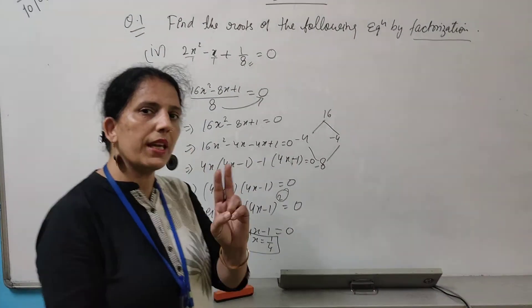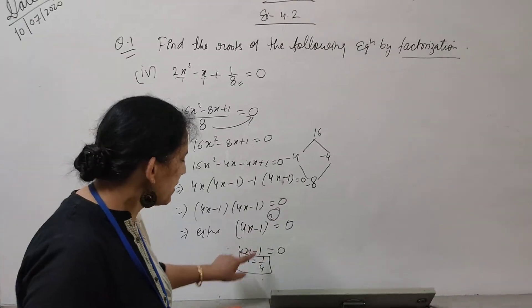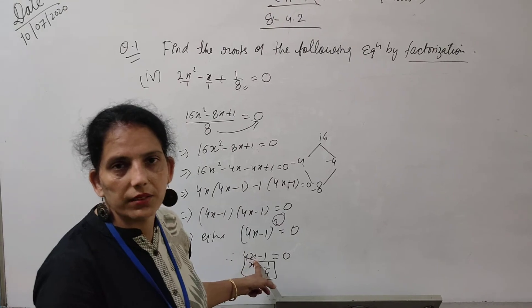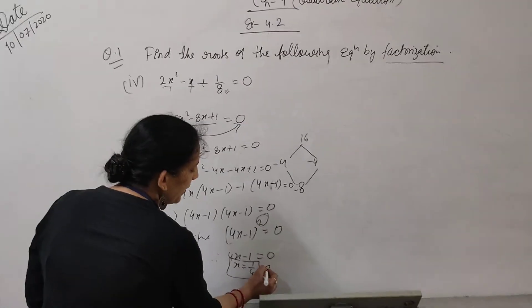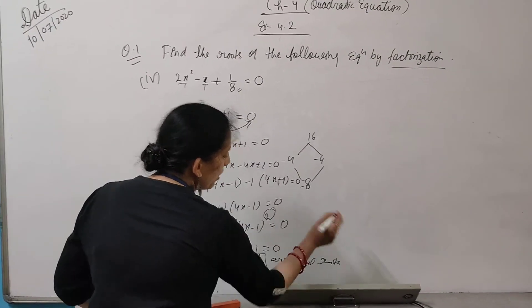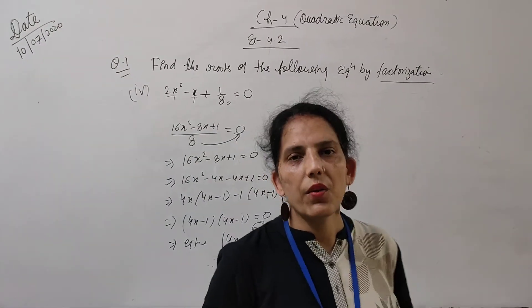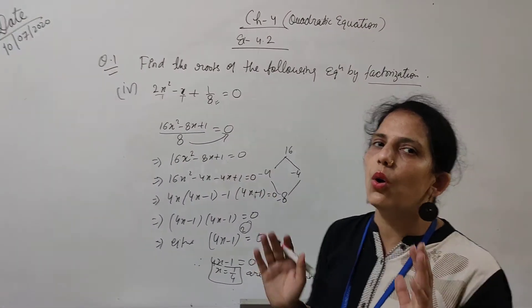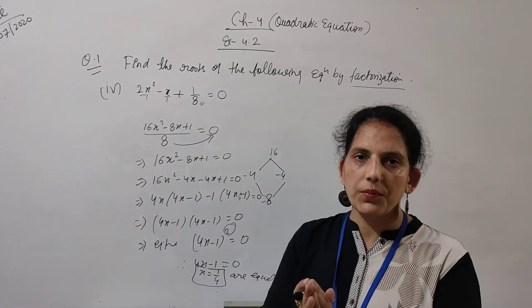But there is again one problem with this. Because if I am taking square root, is 0 positive or negative? Neither it is positive nor it is negative. So therefore we have to simplify here. Therefore, 4x - 1 equal to 0, x is equal to 1/4 are equal roots. Roots are there, but we have to write x = 1/4 are equal roots. I am going to clarify - it is important to say that each and every quadratic equation is having always two roots, whether they are equal or distinct. Doesn't matter.